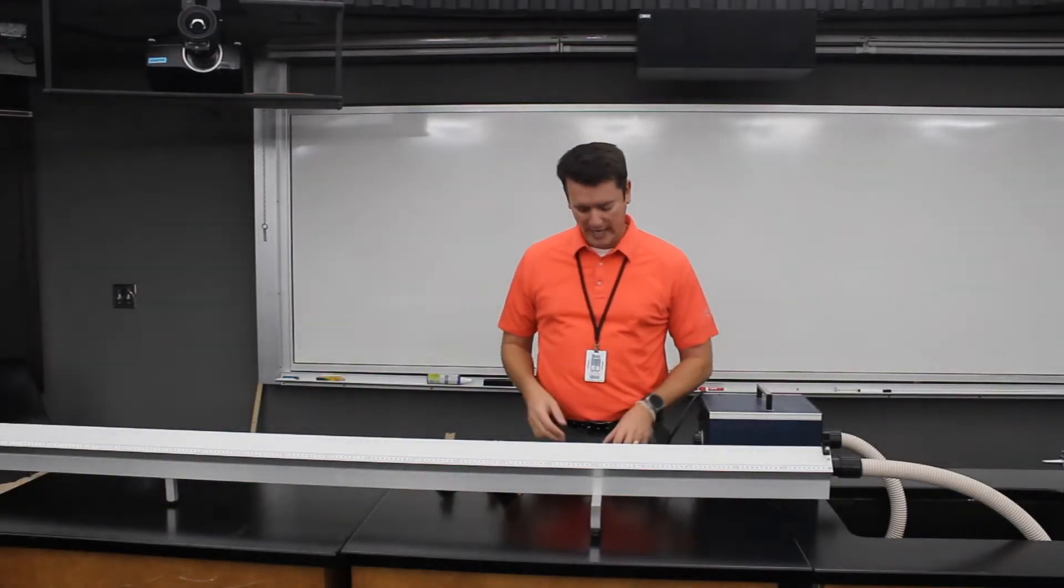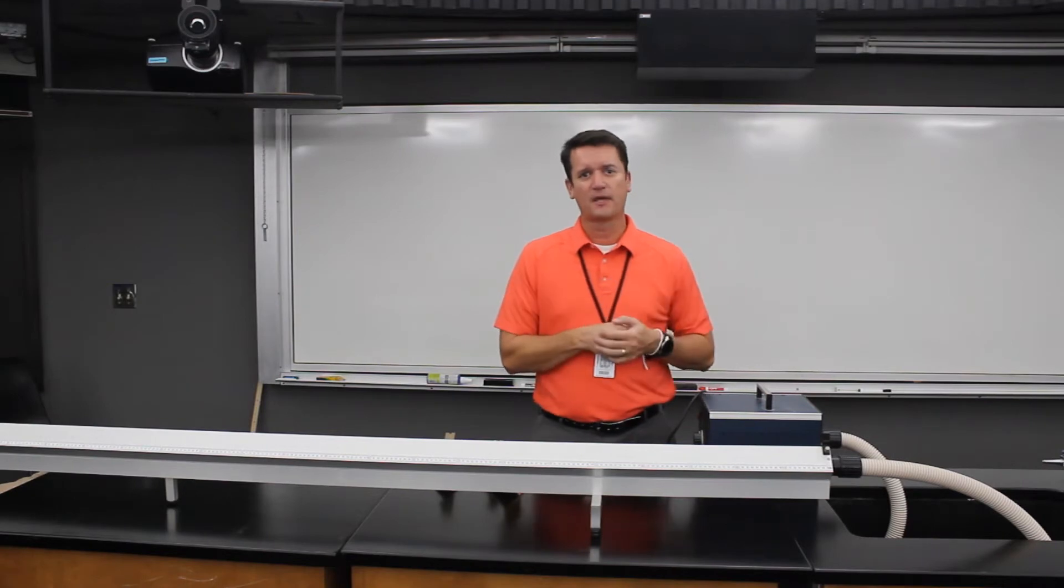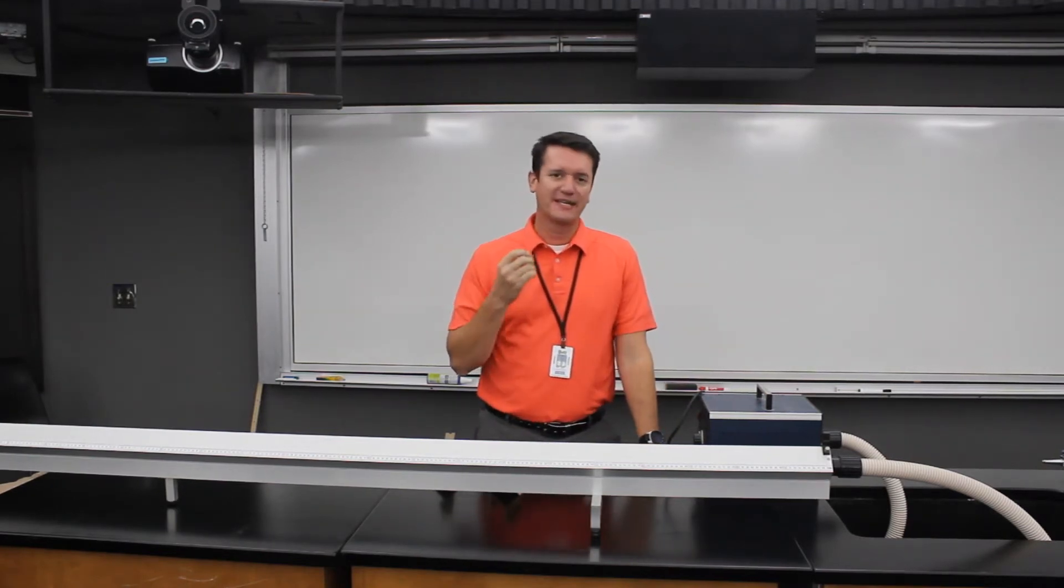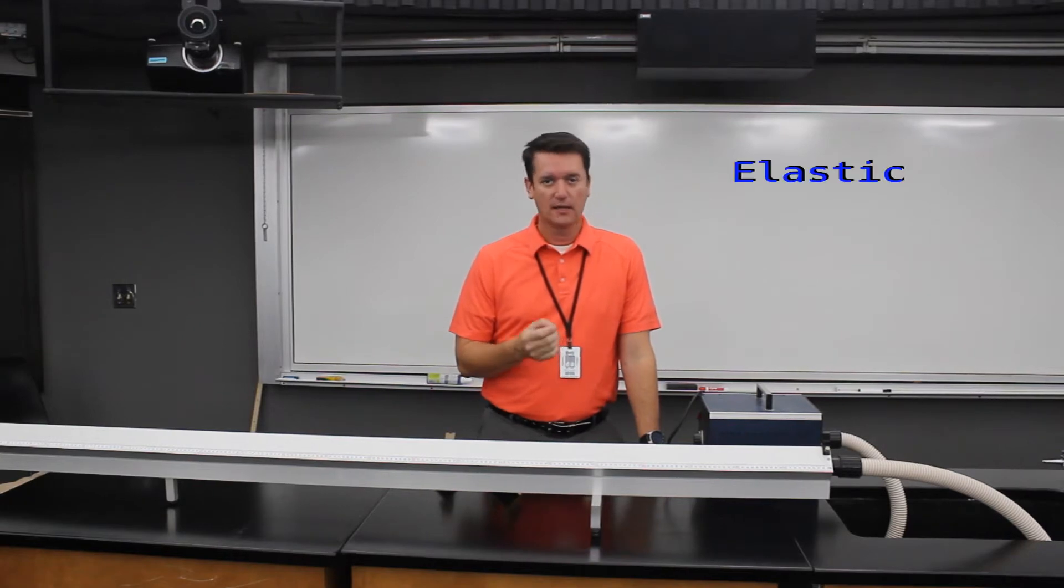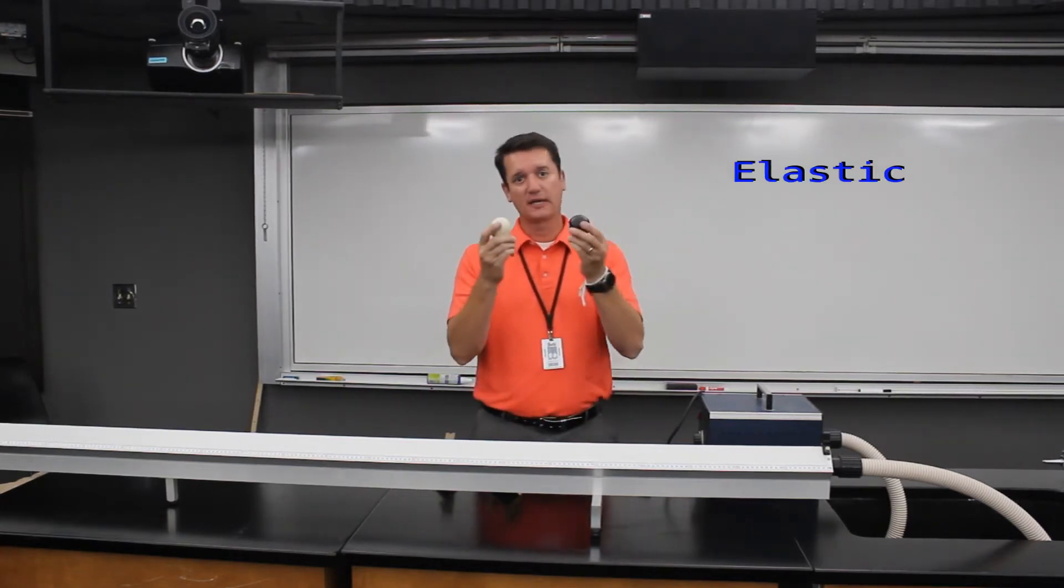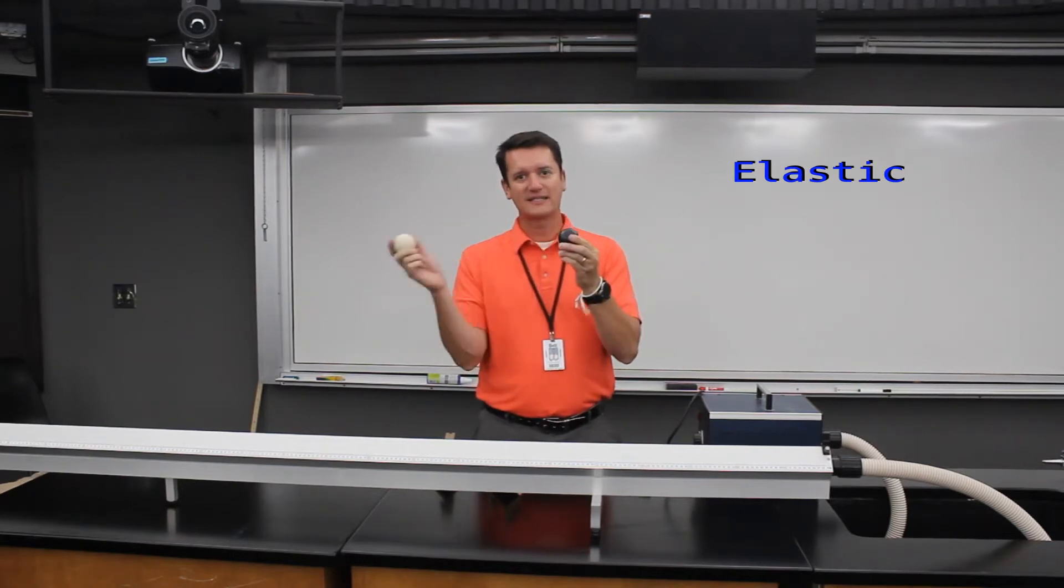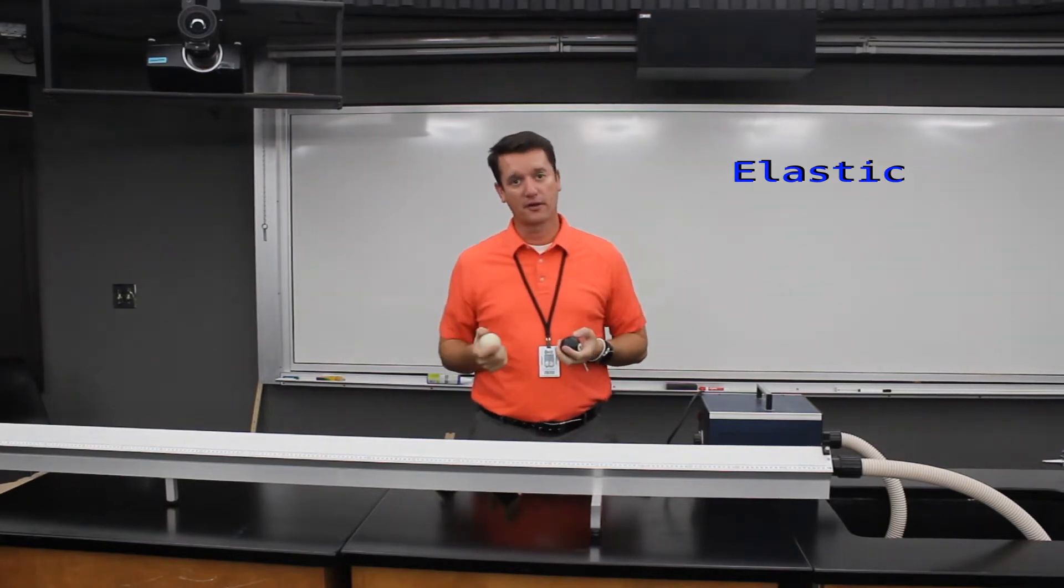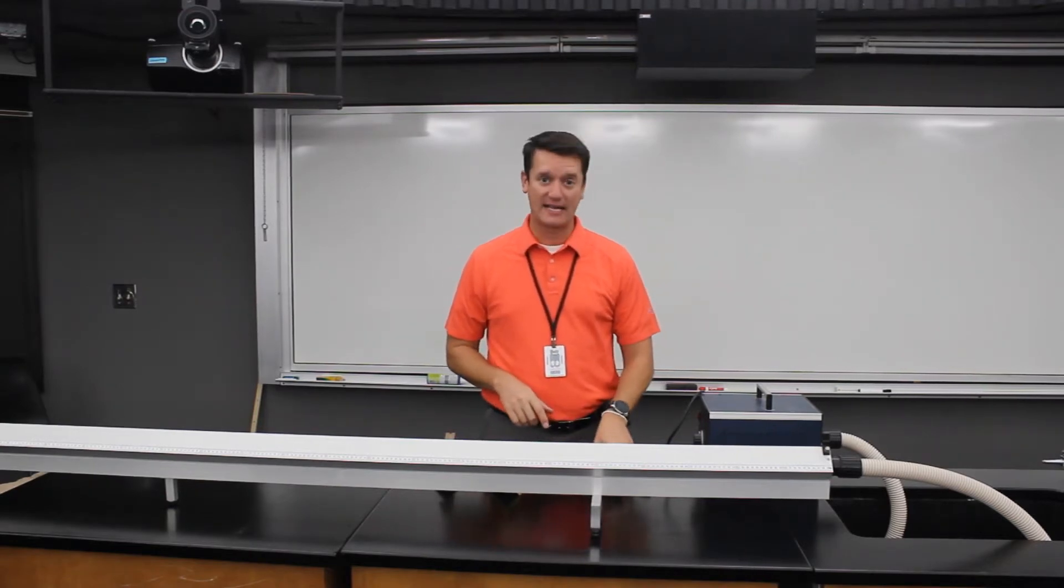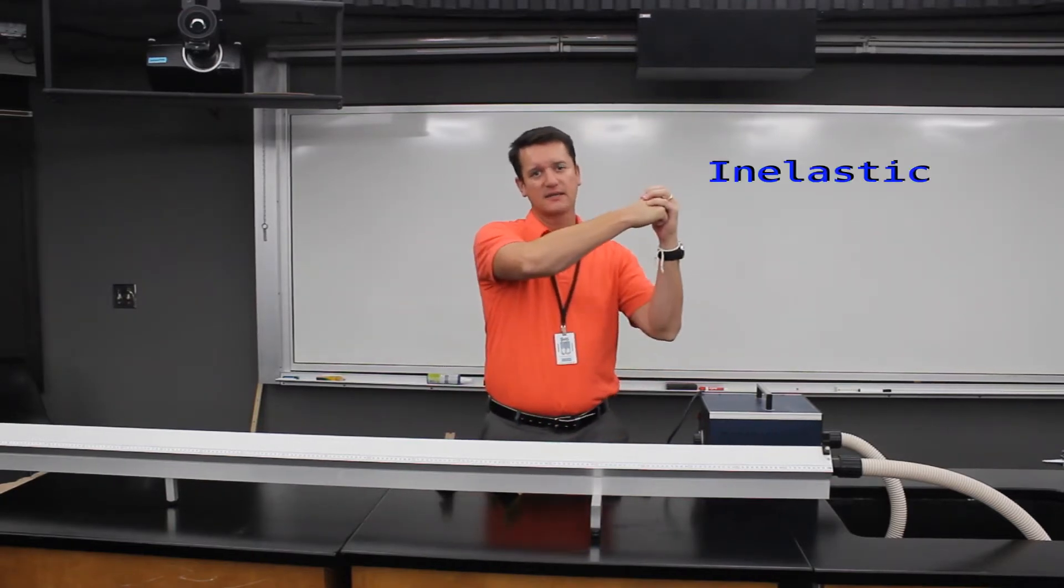Today we're going to be looking at collisions, or what happens when two things hit each other. There's actually two different ways in which things can hit each other. There's what's called an elastic collision. Elastic, you can think bouncy. This would be like billiard balls, where one hits and then the other goes. The other example would be inelastic. This would be where something hits and sticks.